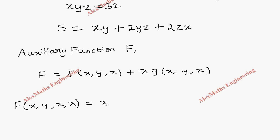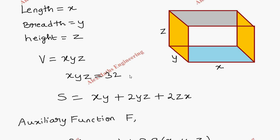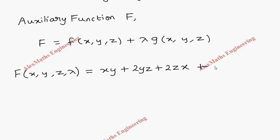Now our auxiliary function will be in terms of x, y, z, and lambda. The first part is xy + 2yz + 2zx plus the constraint. This constraint we have to rewrite as xyz - 32 = 0. So lambda times xyz - 32. So we got the auxiliary function where lambda is the Lagrange multiplier.